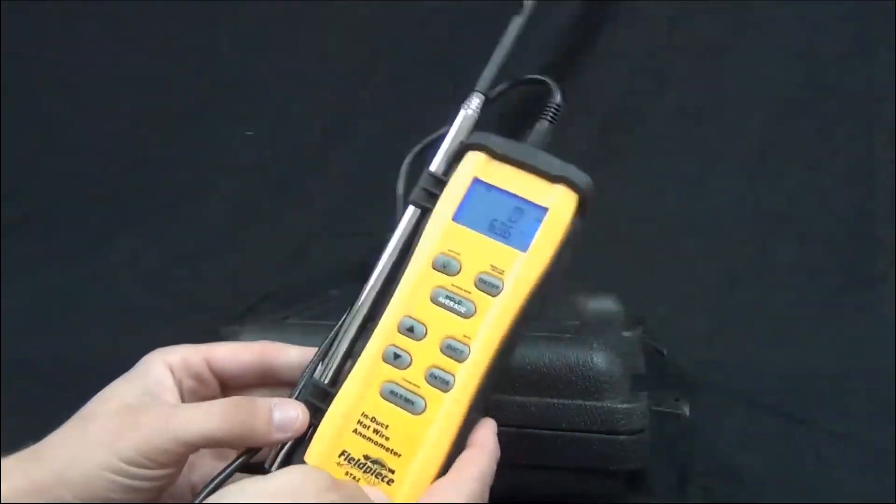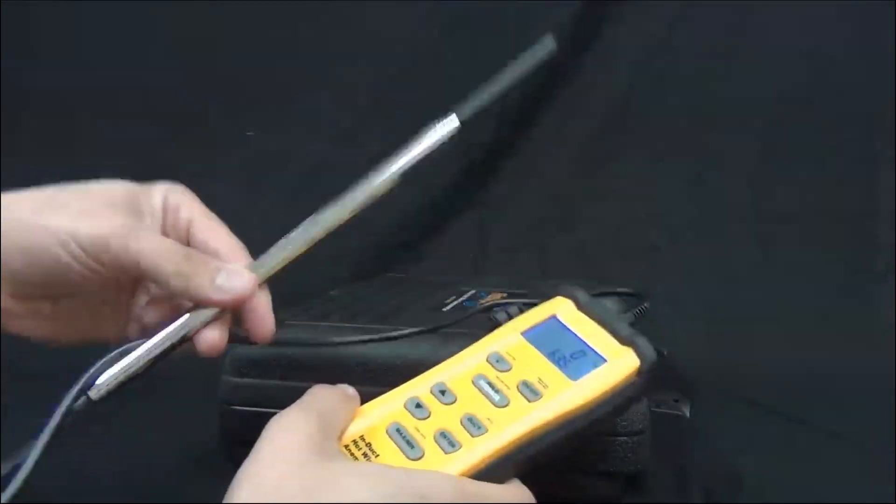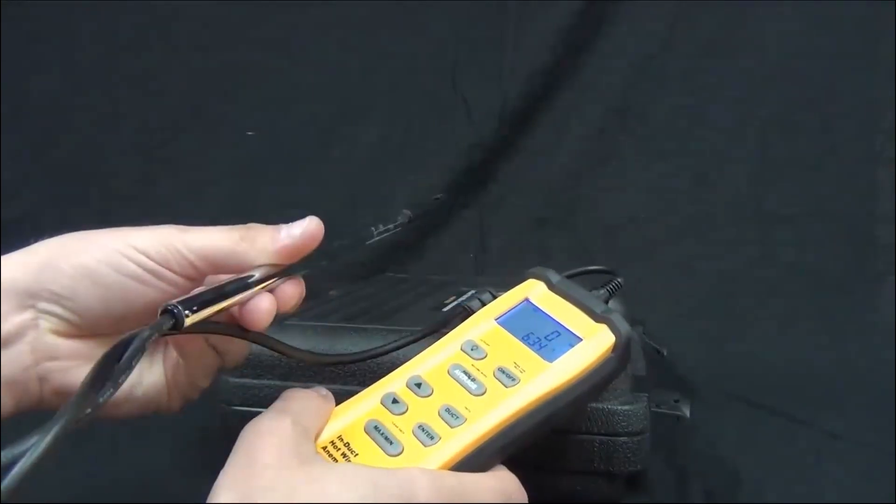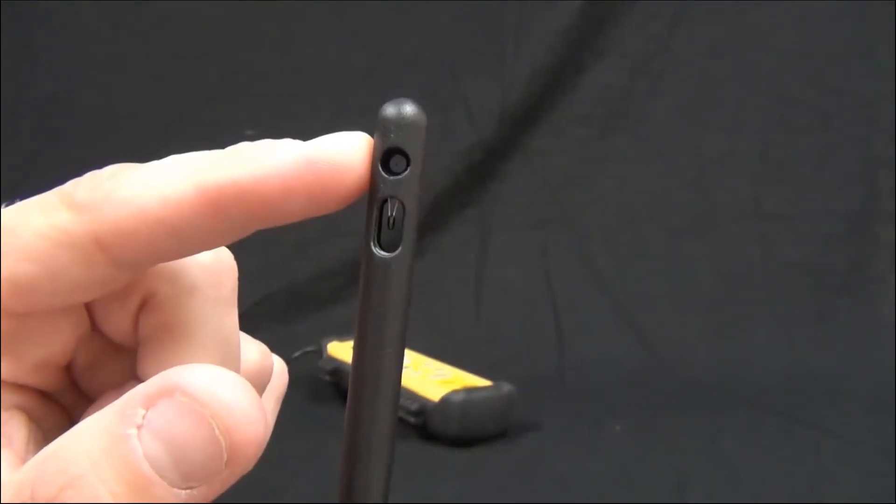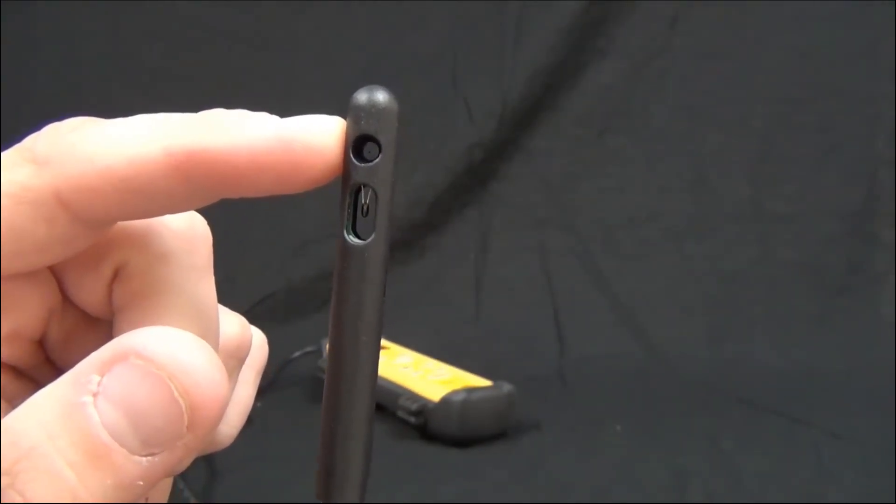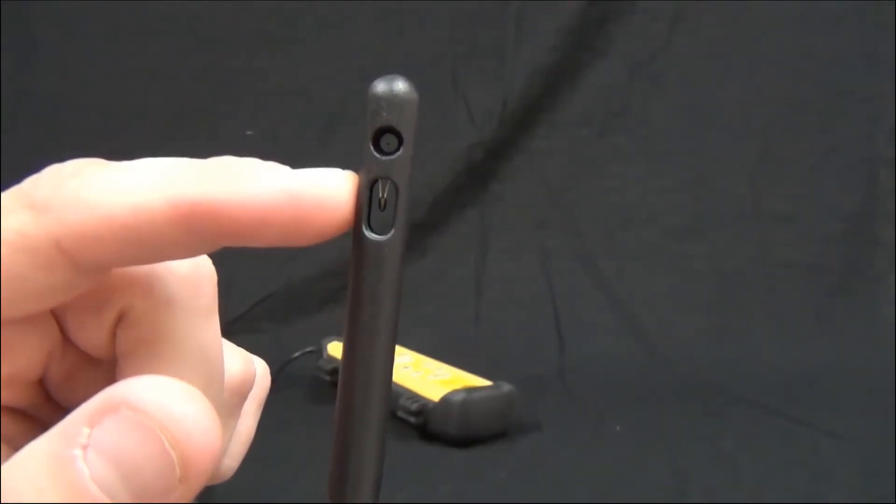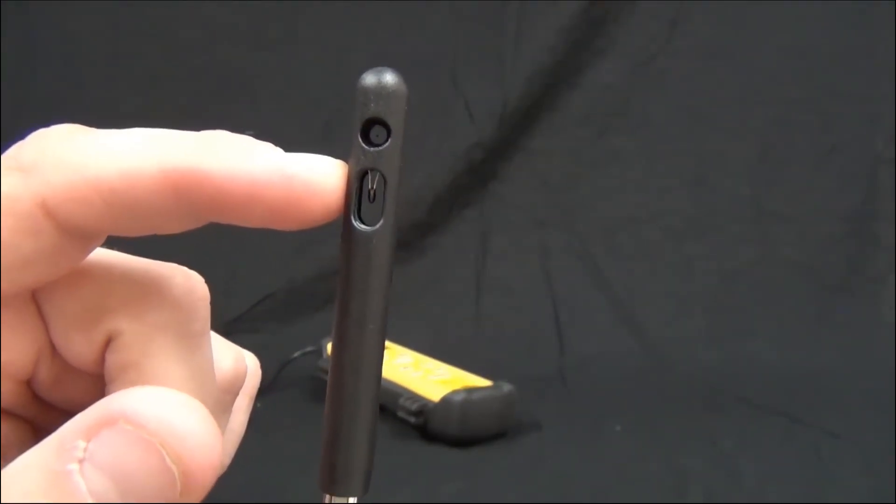On the STA-2 you can see that it has the wand. So let's check out the wand. Now what the wand allows you to do is to get air velocity in the duct. It has two sensors. The first, the top one, is the hot wire. This actually is measuring air velocity. And then we have a thermistor to measure temperature.